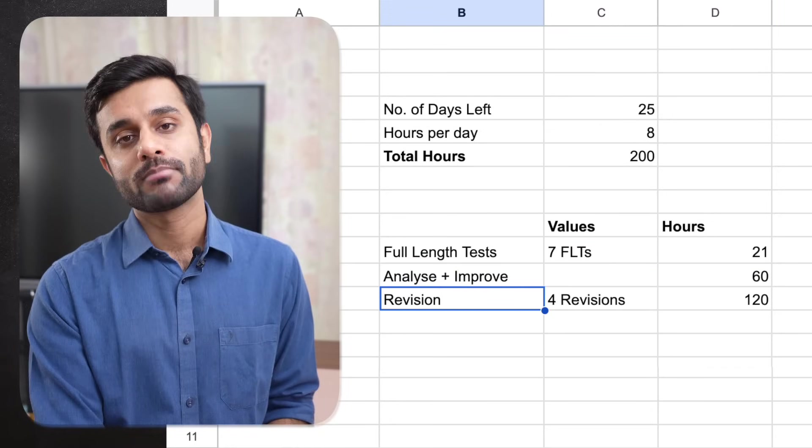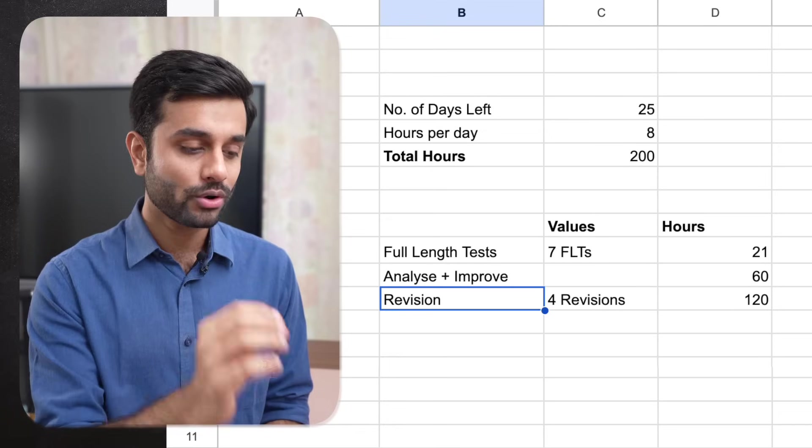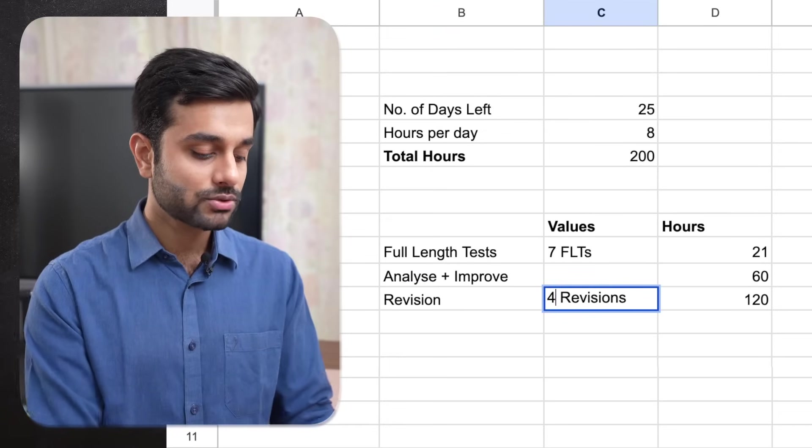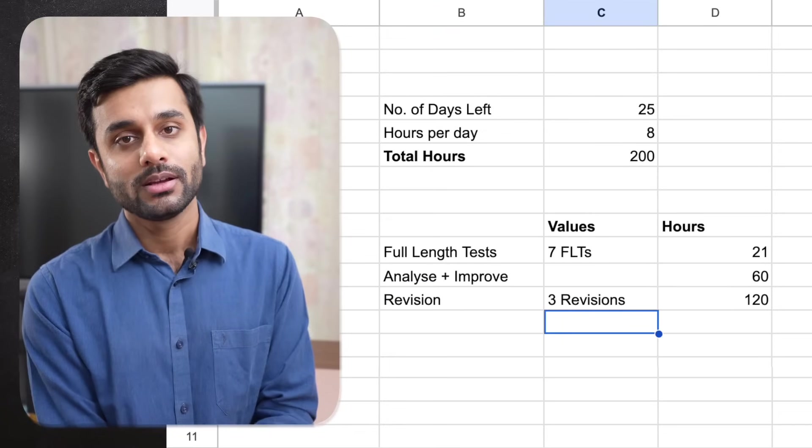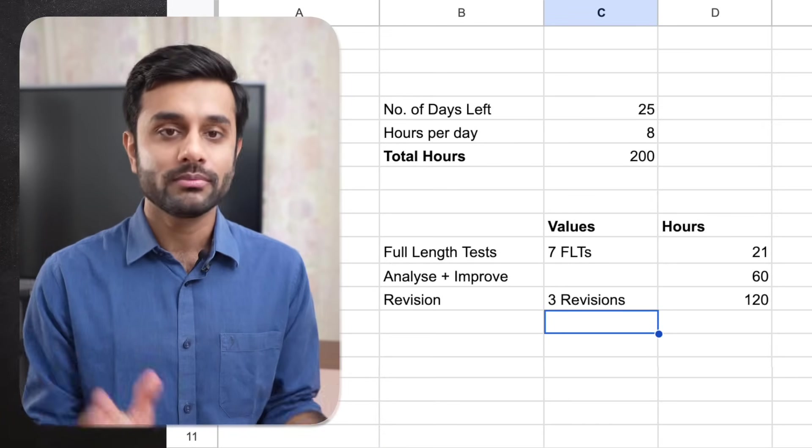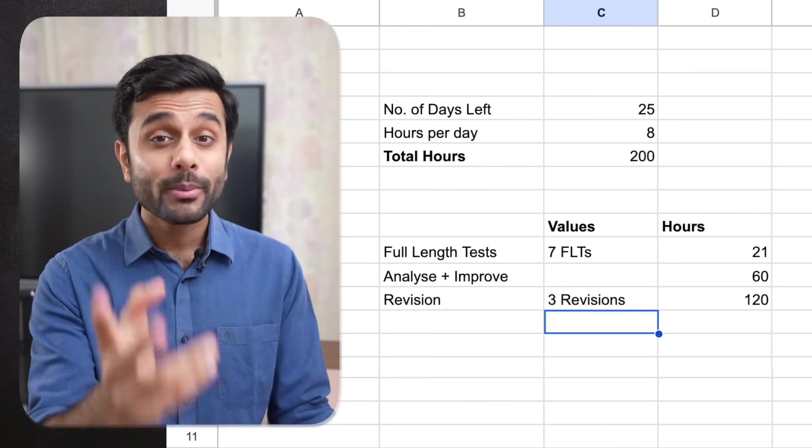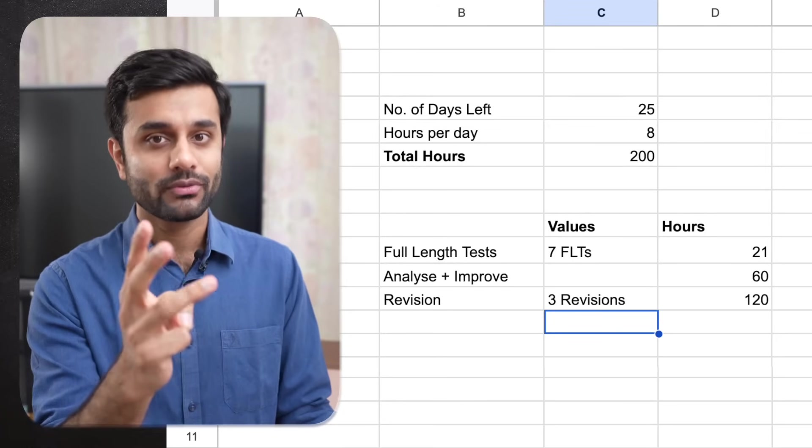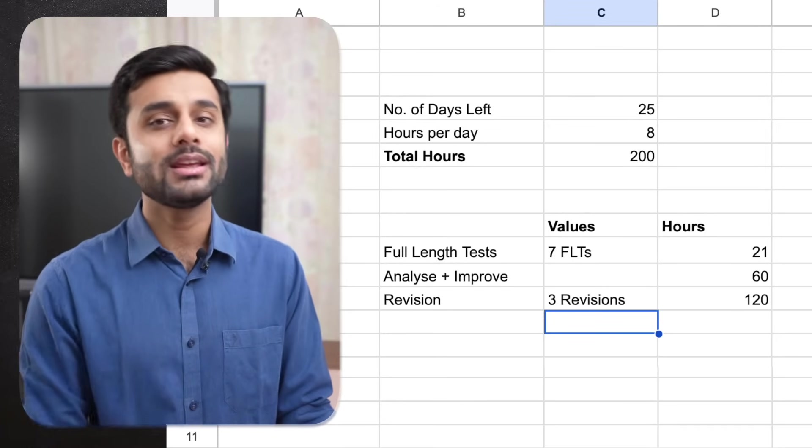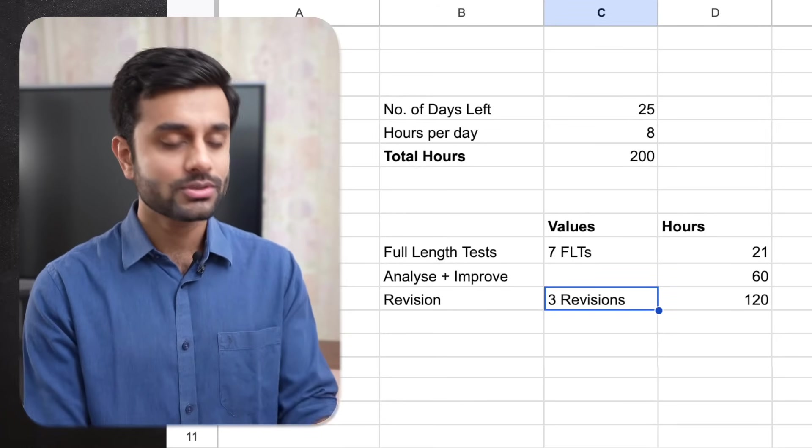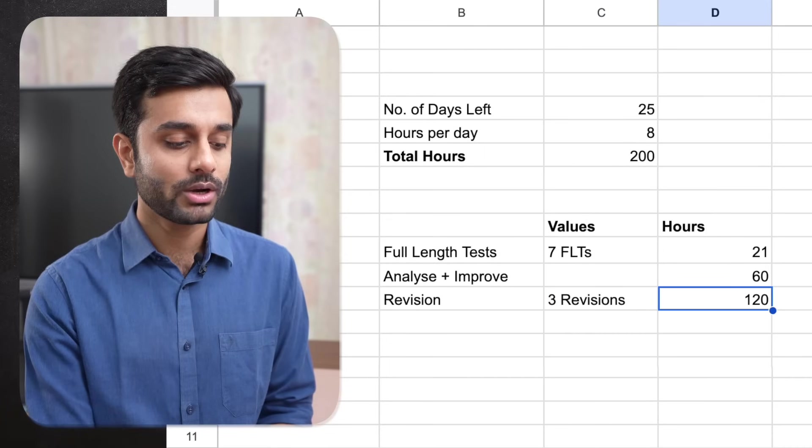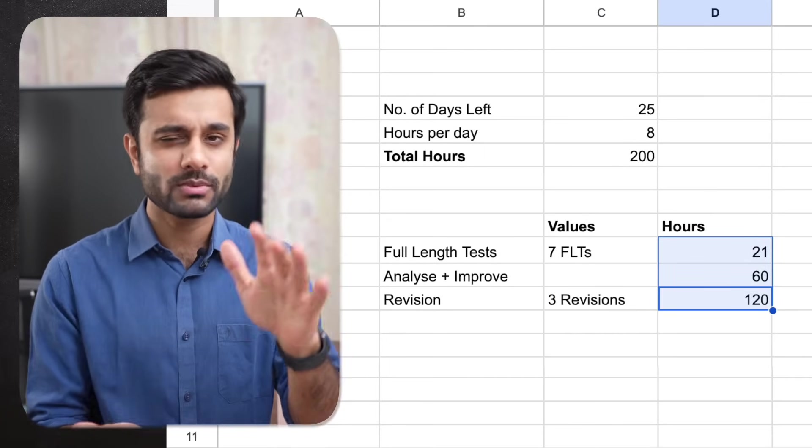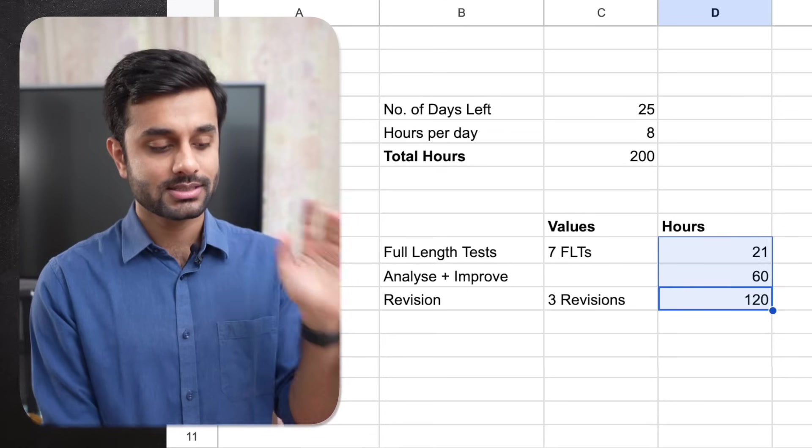Coming to revision, I will highly recommend that if you are not able to do 4 revision, at least go for 3 revision. So for every revision you take more time. Earlier you were taking how many hours? 30 hours for revision. Now you take 40 hours for revision and you just do 3 revisions. Still it will be 120. Overall is 201, approximately 200 hours. 21 plus 60 plus 120.